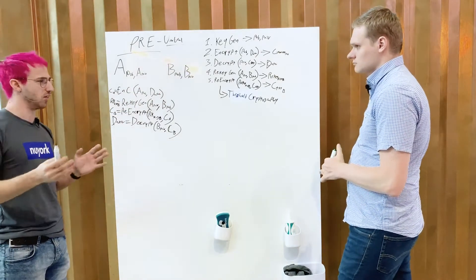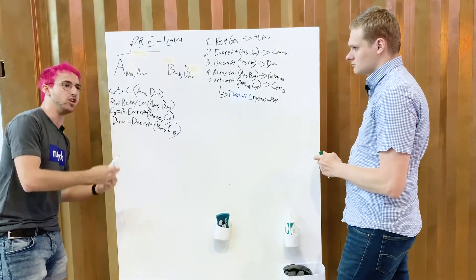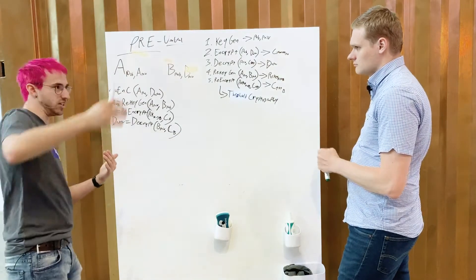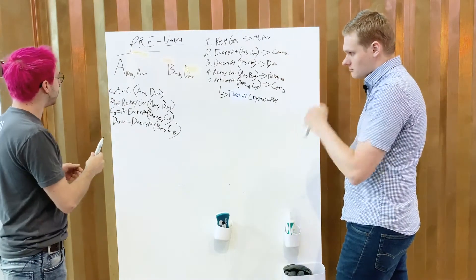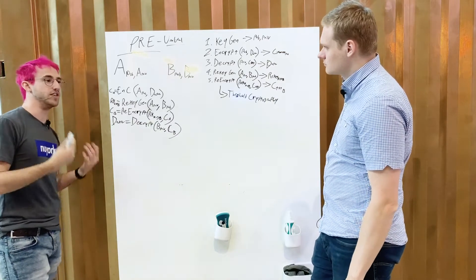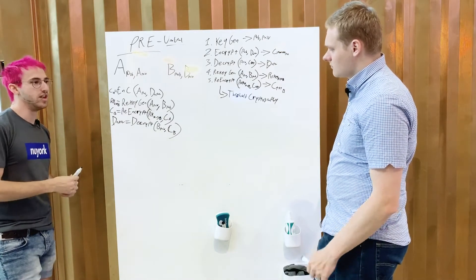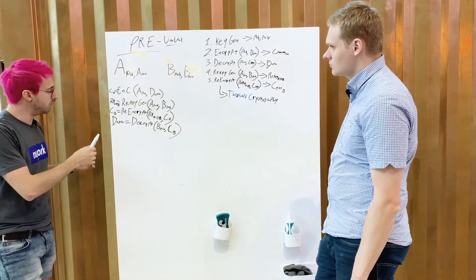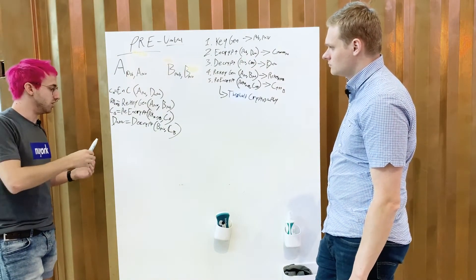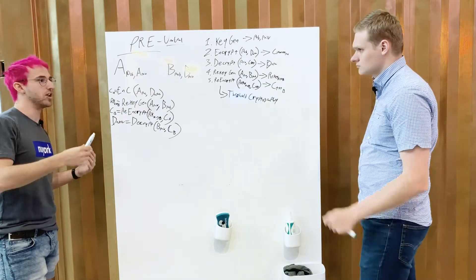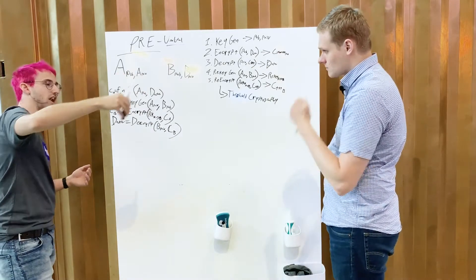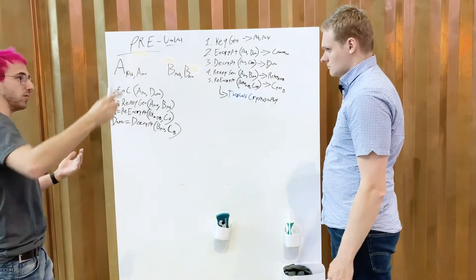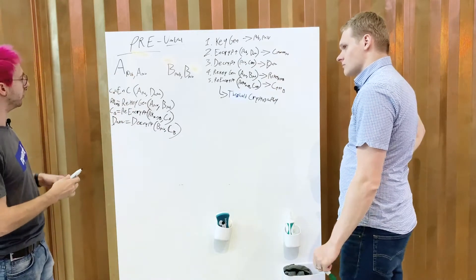NuCypher is a network that allows people to do this — perfect for decentralized applications where someone controls their key but wants to delegate access to their data. In key management, you typically encrypt the secret, store it somewhere else, and request access to decrypt it. With proxy encryption, if you're building a dApp and want to share data with an application, you encrypt the data using the NuCypher network and delegate access to that application or person.